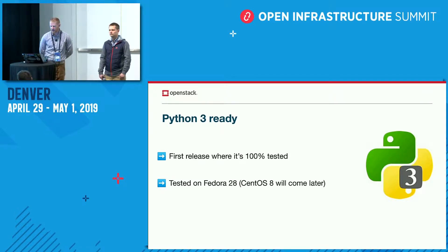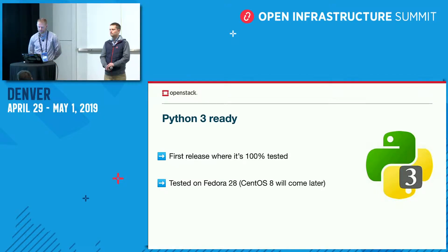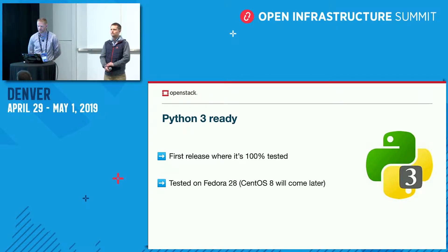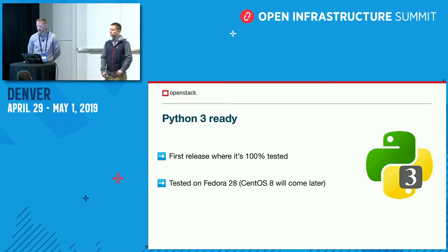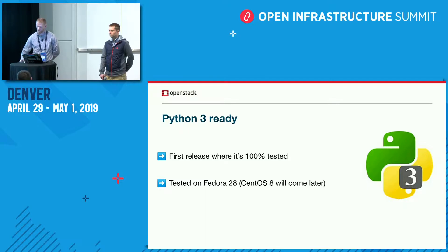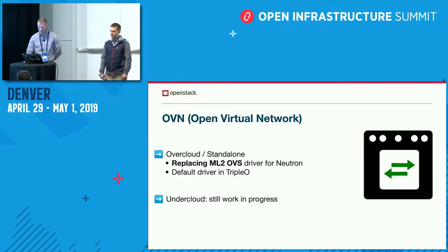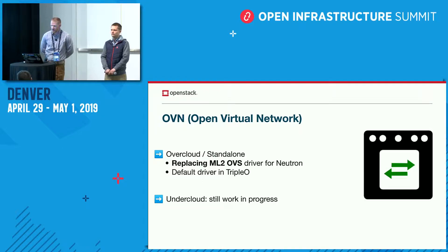A lot of the Stein release effort was around getting our code Python 3 ready. This is the first release where we've added CI jobs for Python 3, so all of our code is now tested. We've also added CI jobs that run on Fedora 28, and we'll still be supporting CentOS — and once CentOS 8 is available with Python 3, that will be supported too.